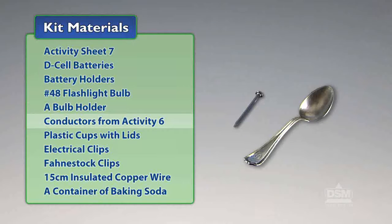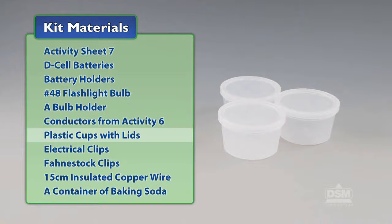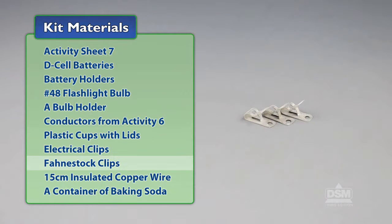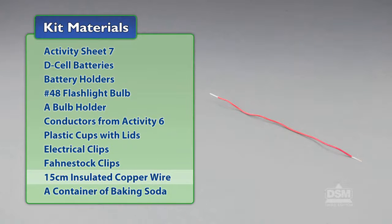You will also need Conductors from Activity 6, Plastic Cups with Lids, Electrical Clips, Fondstock Clips, and 15cm insulated copper wire pieces.